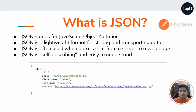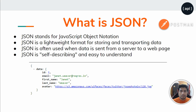Before going into JSON schema validation, we need to understand what JSON is. JSON stands for JavaScript Object Notation. These are basically key-value pairs where you can transfer information as a request or response. For example, if we hit an endpoint we get a response in a human-readable, lightweight format containing fields like user ID, email, first name, last name, and avatar link.